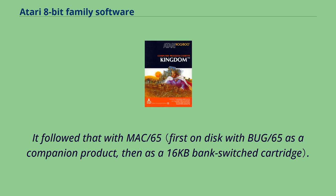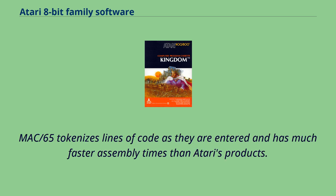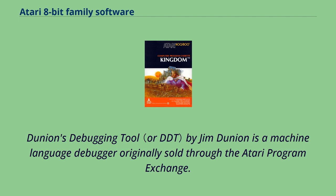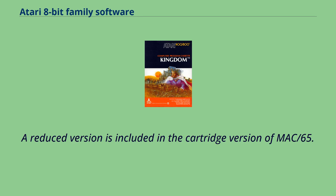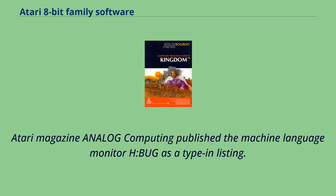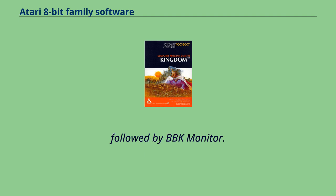It followed that with Mac/65. Mac/65 tokenizes lines of code as they are entered and has much faster assembly times than Atari's products. Dunyon's Debugging Tool by Jim Dunyon is a machine language debugger originally sold through the Atari Program Exchange. A reduced version is included in the cartridge version of Mac/65. Atari magazine Analog Computing published the machine language monitor HBUG as a type-in listing, followed by BBK Monitor.